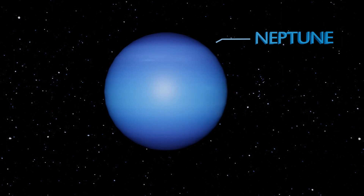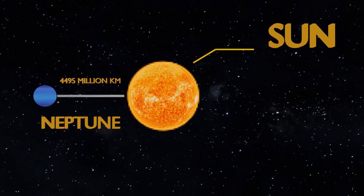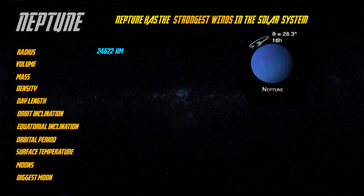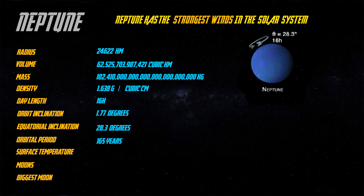Neptune is the last planet of our solar system. It is 4495 million kilometers from the Sun. Its atmosphere is mainly made up of hydrogen and helium. Neptune has the strongest winds in our solar system and is the least studied planet. It has 14 moons, and the biggest moon of Neptune is Triton.